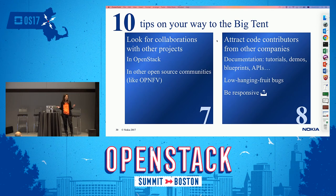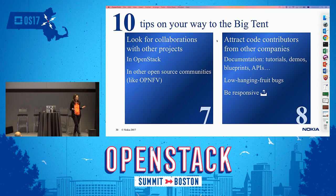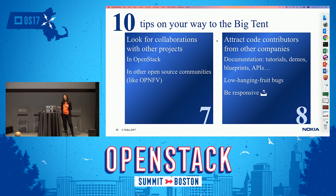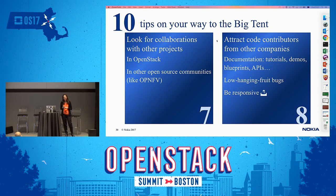You want people to know your project, and one way is by collaborating with other projects. Find similar projects or projects where integration can make both sides benefit and have better functionality. The first place to look is other OpenStack projects, but there could also be other open source non-OpenStack projects — we found similarities with the OPNFV community. The more collaborations you have, the more people know your project and the more added value it provides.